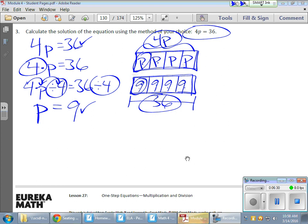And there I have it. So what did I do? Well, I took my 4p and I actually divided it into four parts. And I'm making that equal my 36. And what did I do with that 36? Well, I split that into four parts as well. So I'm left with p on this side and I'm left with 9 on this side.